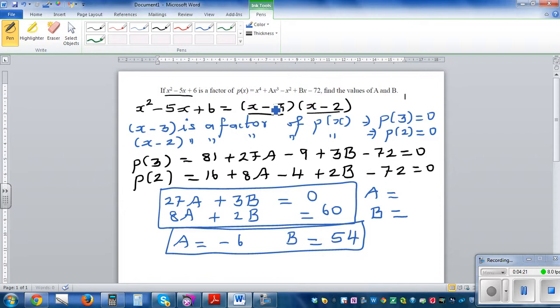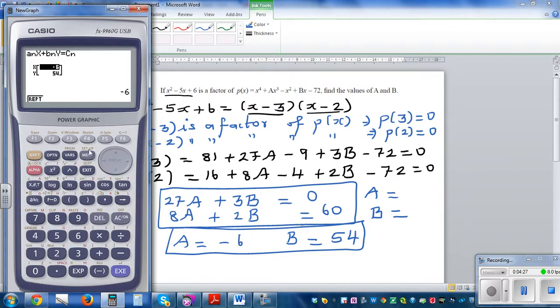If x minus 3 is a factor, the root would be 3 and 2. Let's check that. Go to equation, go to polynomial third degree. Let's put 1 under A, B is your B value which is minus 6, and your C is minus 1.